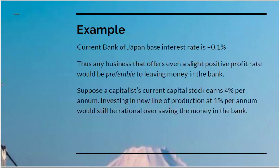The Bank of Japan posts its rate of interest. Currently, the Bank of Japan base rate of interest is negative — it's minus 0.1%. You have to pay the bank to put money in it. Thus, any business undertaking that offers even a slight positive profit is going to be preferable to leaving money in the bank. Suppose a capitalist's current capital stock — plant and equipment — is earning him a 4% rate of return. If he's given the opportunity to invest profits currently sitting in the bank, on which he's being charged a negative rate of interest, and has the opportunity of making even 1% profit on those, it's going to be rational to take that. Even if it's less than his current rate of profit, he will take it because the option is leaving money in the bank and getting nothing, or actually losing money.